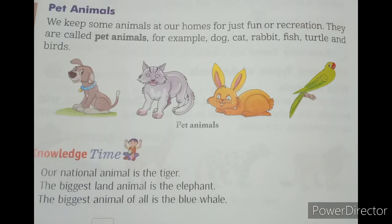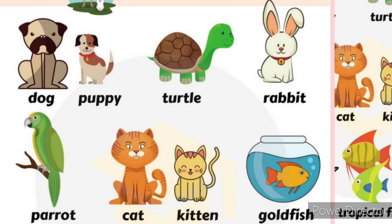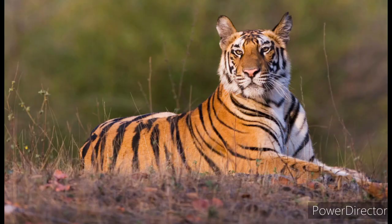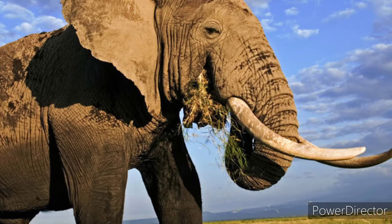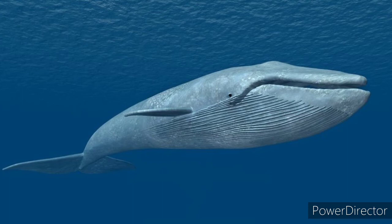Pet animals: we keep some animals at our homes for just fun or recreation. They are called pet animals. For example, dog, cat, rabbit, fish, turtle, and birds. Our national animal is the tiger. The biggest land animal is the elephant. The biggest animal of all is the blue whale.